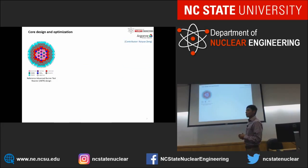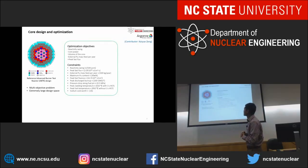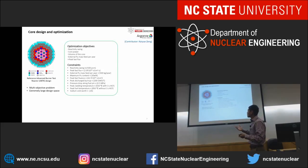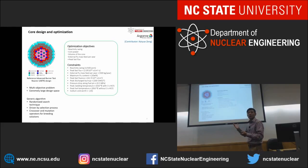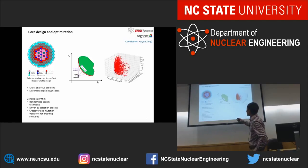We also do design and optimization — basically trying to do everything to improve and make things better in the reactor. In the case of the advanced burner test reactor, we're talking about optimizing these design objects while keeping in mind a list of constraints we try not to violate. We need a good algorithm to deal with this multi-objective problem, which is why we chose a genetic algorithm. It can push the design as close as possible to optimal, and you can pick your optimal solutions from the Pareto surface.